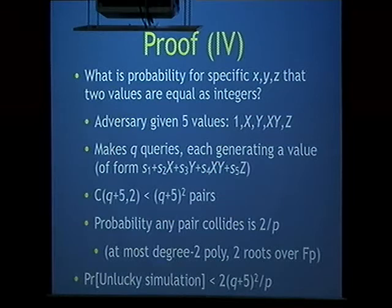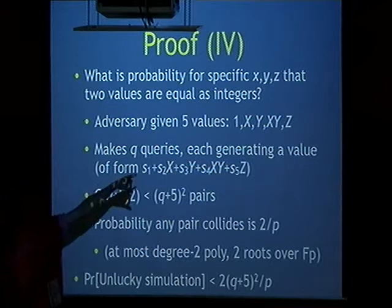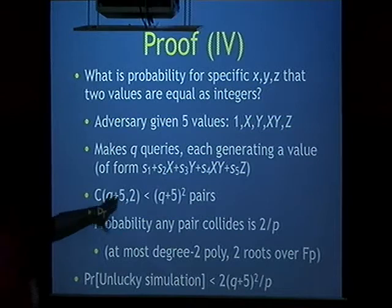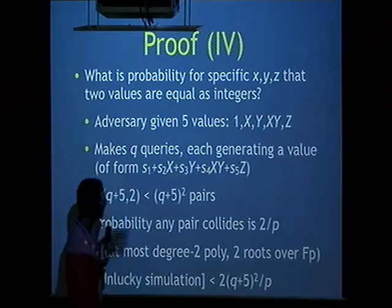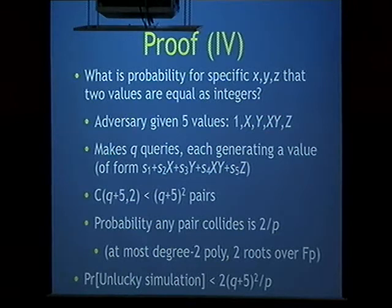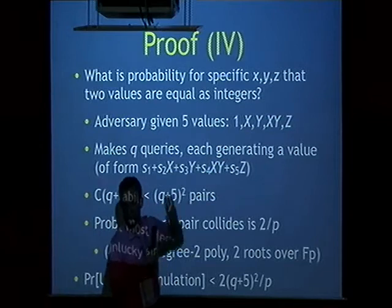We used this heuristic where we didn't assign them to be equal, and we're no longer correctly running things. So in order to show that DDH is hard, we have to bound the probability that that happens — bound the probability that for particular integers X, Y, and Z plugged in for the formal variables big X, big Y, big Z, we'll get equality between two of the values that the adversary computed. The adversary is given five values: 1, X, Y, XY, and Z.